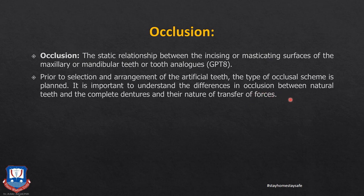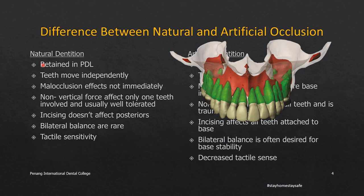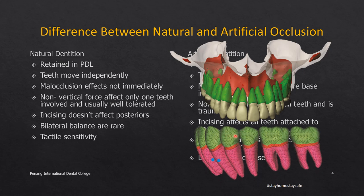It is important to understand the differences in occlusion between natural teeth and complete denture teeth, as they are quite different from each other. Natural teeth are retained by the periodontal ligament anchored in the bone of the maxilla and mandible. The teeth are independent of each other and move independently to masticating and occluding forces. Any malocclusion affects only that individual tooth and does not affect the other teeth. Non-vertical forces such as lateral forces in the mesiodistal or buccolingual direction are usually well tolerated.